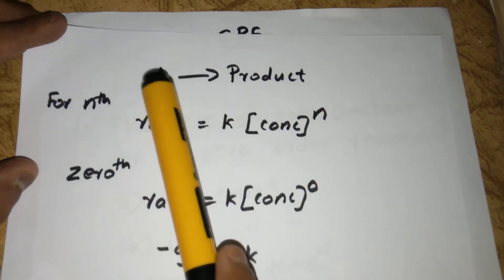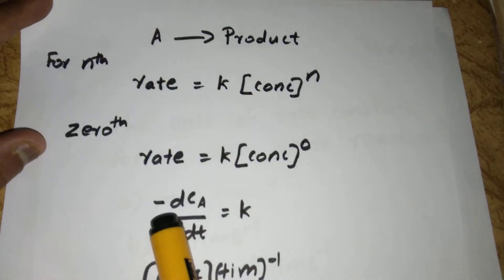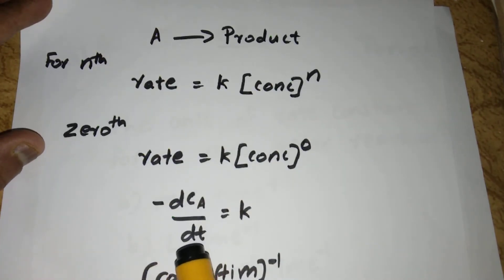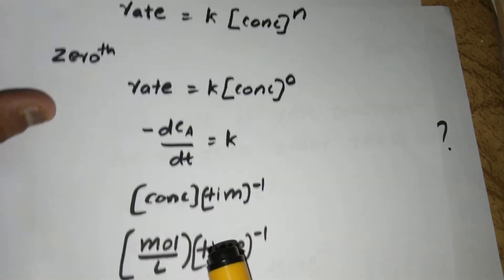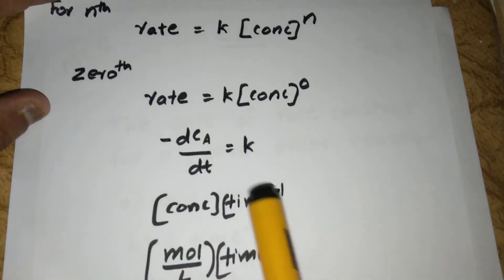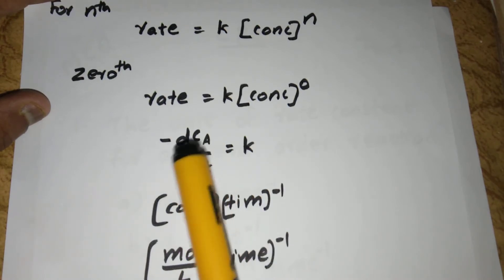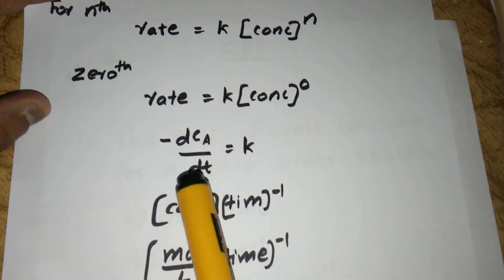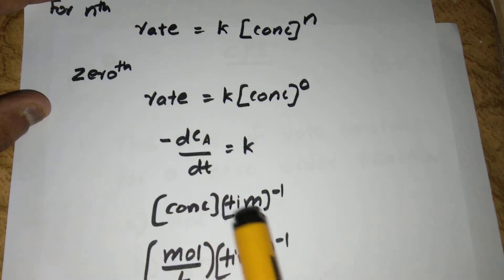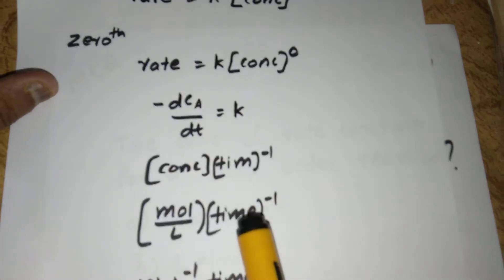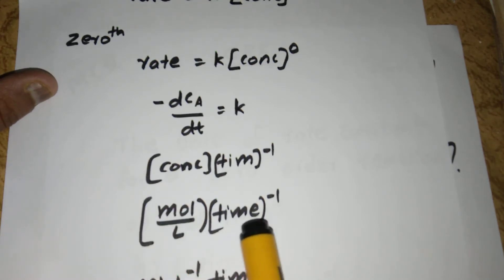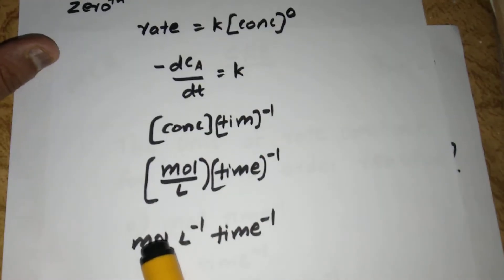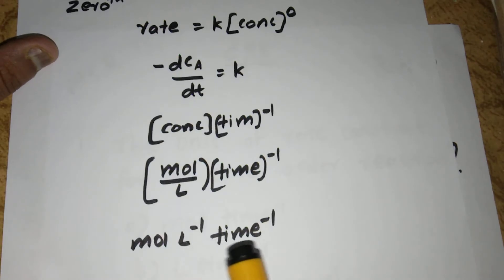Rate means the reactant A is consuming, that is minus dCa/dt. So minus dCa/dt is equal to k. Here dCa is the concentration part and dt is time, so we get time raised to minus 1. Concentration means mol per liter, so the unit of k is mol·liter⁻¹·time⁻¹.